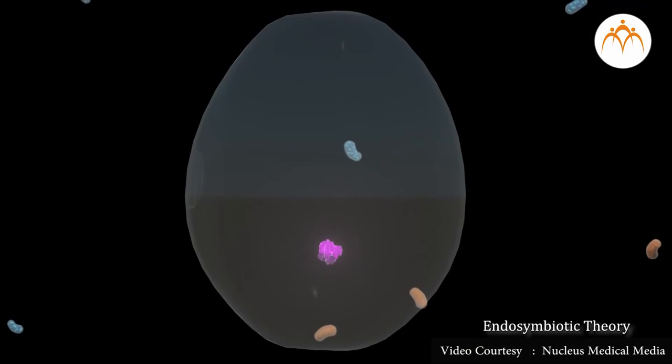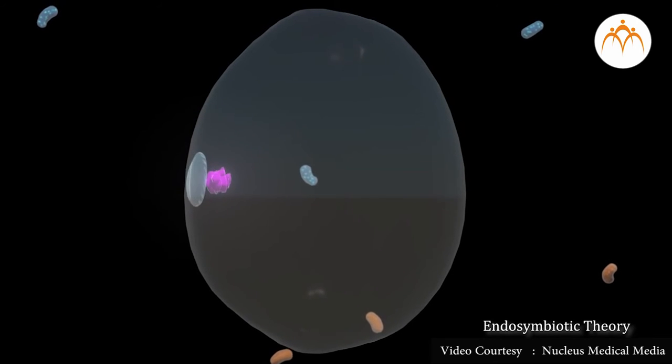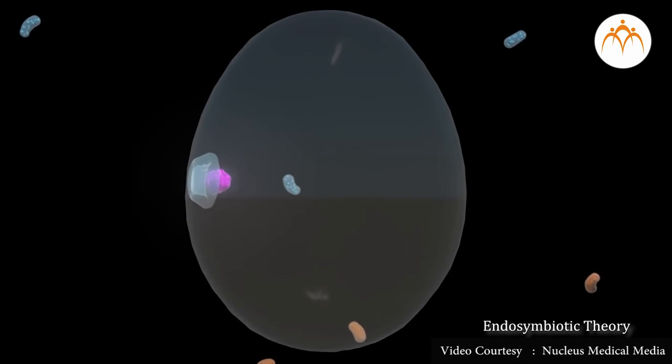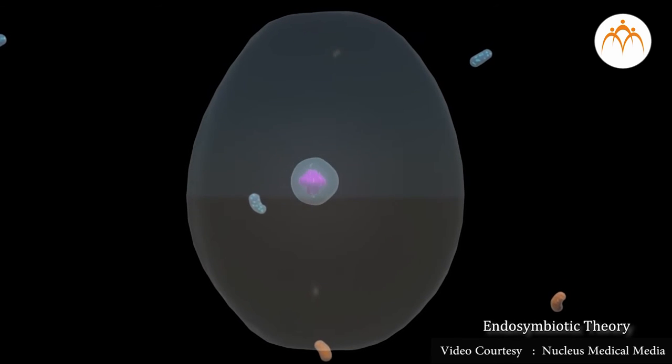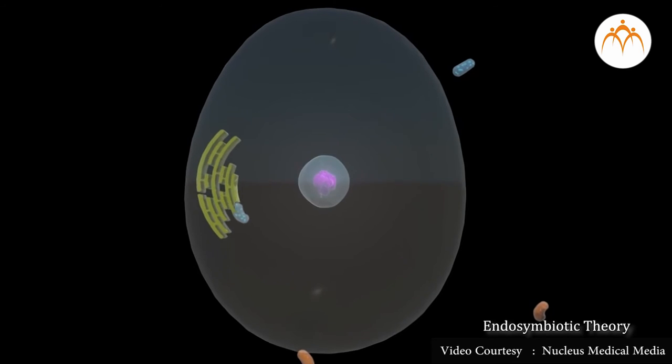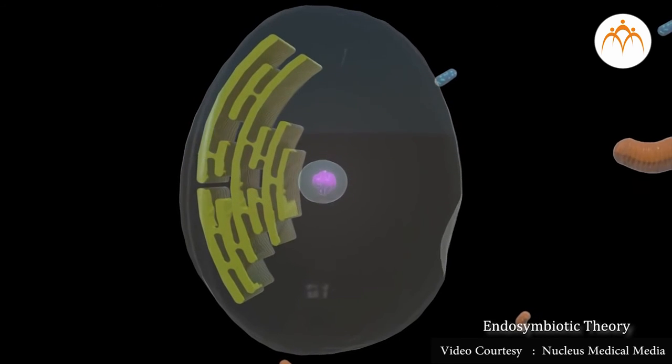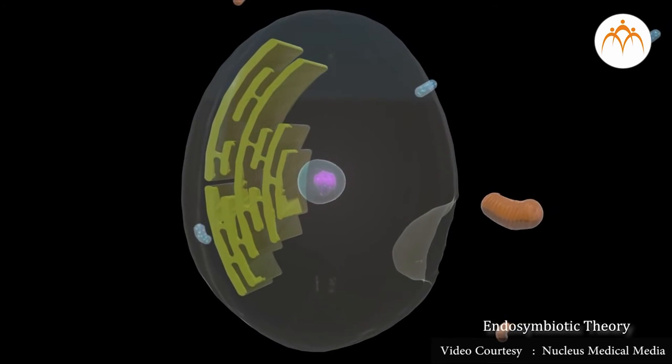In this theory, the first eukaryotic cell was probably an amoeba-like cell that got nutrients by phagocytosis. Some of these amoeba-like organisms ingested prokaryotic cells that then survived within the organism and developed a symbiotic relationship.